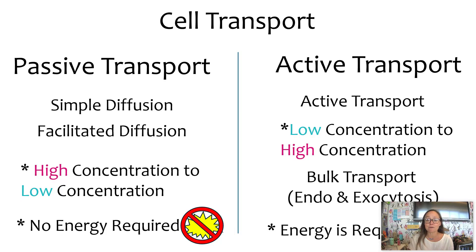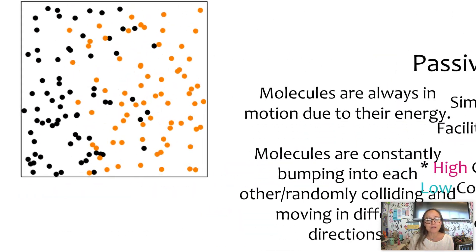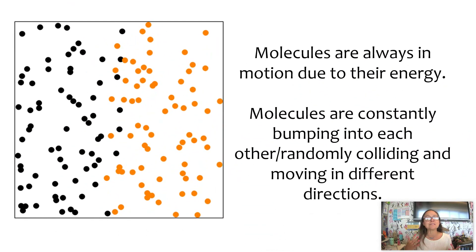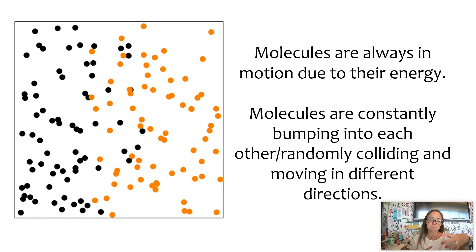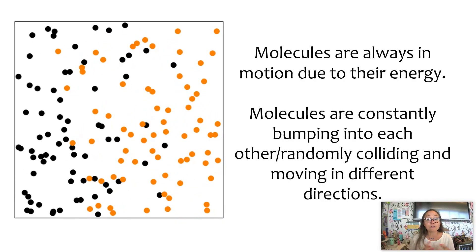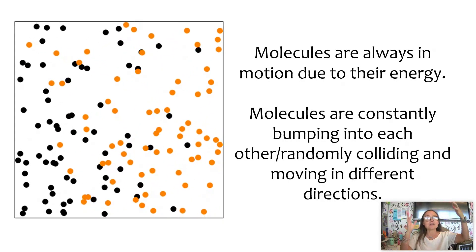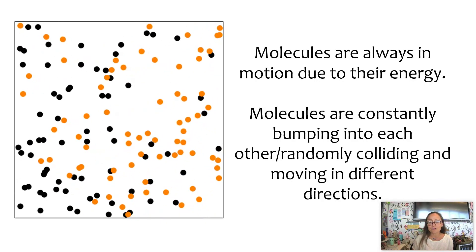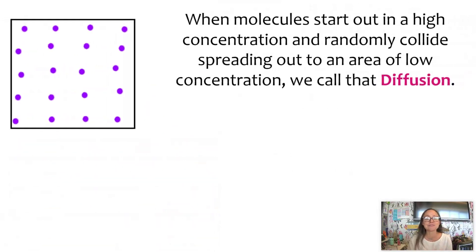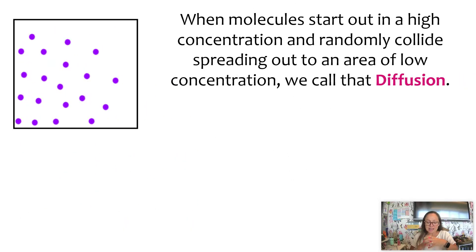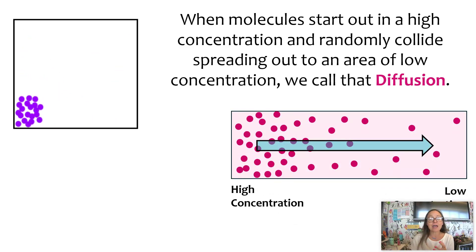So in active transport, it does require energy. Now it's important to keep in mind when we think about molecules, molecules are always in constant motion. They're always moving and bumping and colliding into each other. Now if you heat something up, they're going to move faster. If you cool something down, they'll move more slowly. And so as molecules start out in a high concentration, as they randomly collide with each other, we call that diffusion. Now as molecules move from high concentration to low concentration, due to random collisions, if it crosses through a cell membrane, that's going to be simple diffusion.